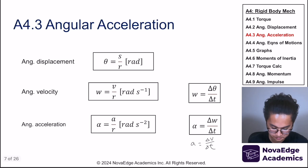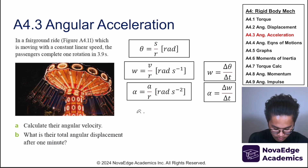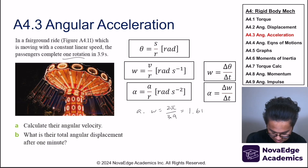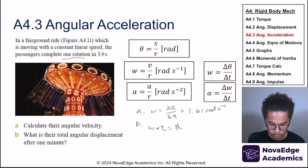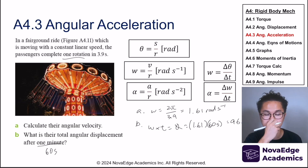For the practice problem: calculate the angular velocity of something completing one rotation in 3.9 seconds. One rotation equals 2π radians, so angular velocity is 2π divided by 3.9, giving 1.61 rad/s. For part b, total angular displacement after one minute: multiply 1.61 rad/s by 60 seconds to get 96.6 radians.